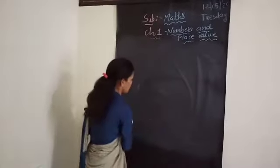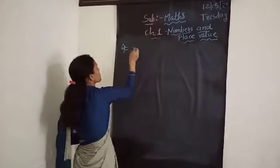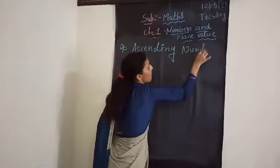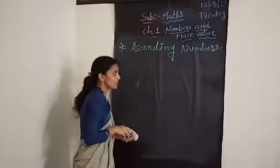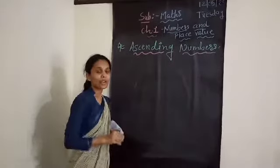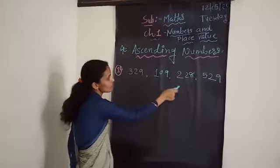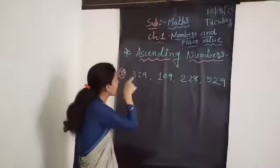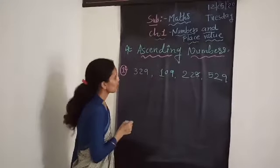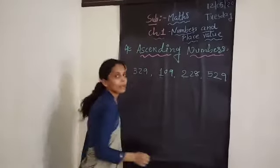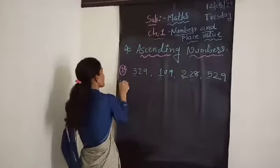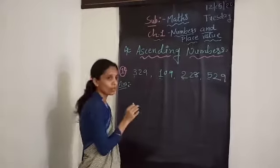Now the next topic is Ascending Order. In ascending order, you have to write the numbers from smaller to bigger. We have to arrange numbers in ascending order. As I told you, for that we have to first compare the Hundreds place value and go from smaller to bigger.